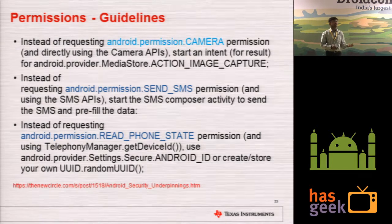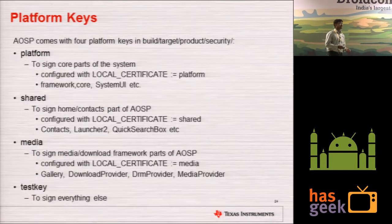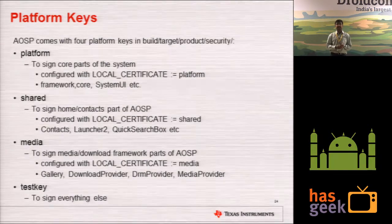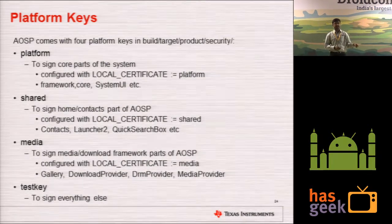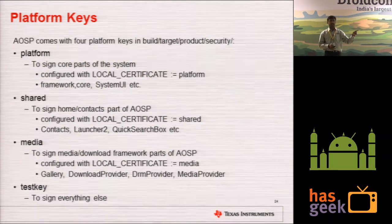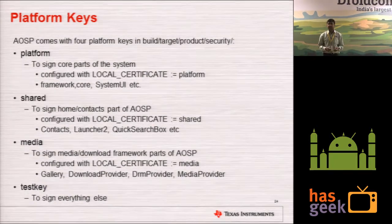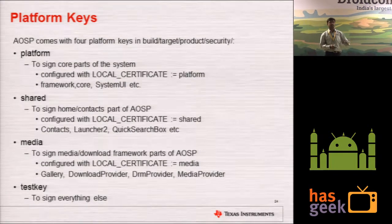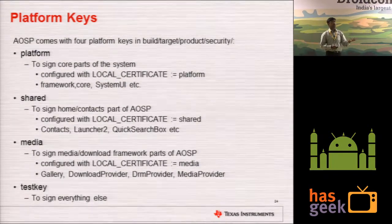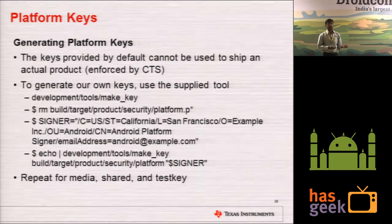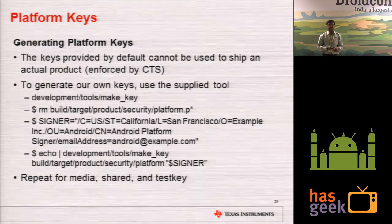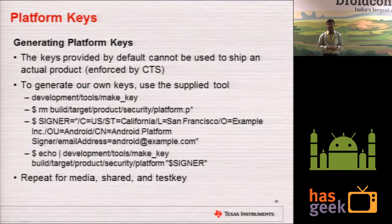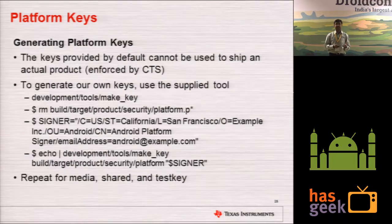There are four platform keys. Each application or package has to be signed with a key. This is more of interest to a device manufacturer or complete Android package provider — you have to sign all your platform, shared, and media content with some keys. There are keys provided in AOSP, but you have to generate your own platform keys so that it will pass the Android CTS (Compatibility Test Suite), which validates your Android distribution.